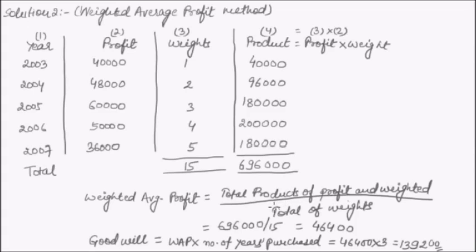This is how we calculate goodwill using the Average Profit Method — either simple average profit or weighted average profit. The weighted average profit method is considered better than the simple average method because it assigns greater importance to the most recent data. We will continue with the Super Profit Method in our next video. Thank you.